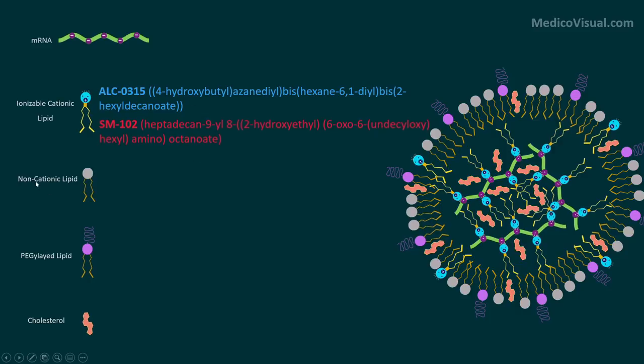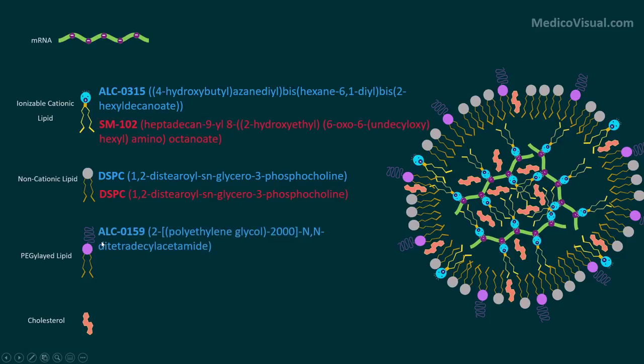Ionizable cationic lipids that are being used we have already discussed. What about non-cationic lipids? Non-cationic lipids being used in Pfizer as well as Moderna's vaccine is called DSPC. While the pegylated lipid being used in Pfizer's vaccine is named as ALC-0159 and that being used in Moderna's vaccine is called PEG2000-DMG and of course cholesterol is present in both type of vaccines.